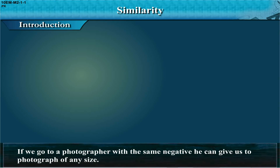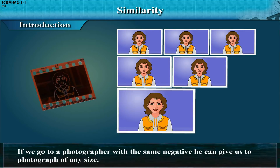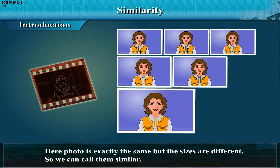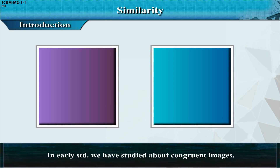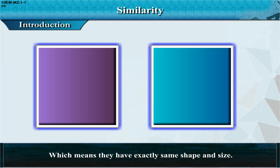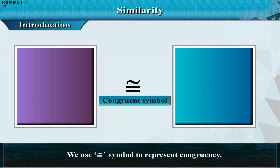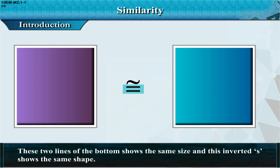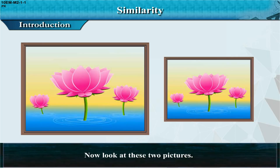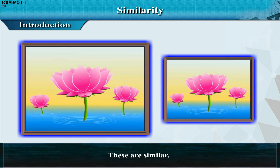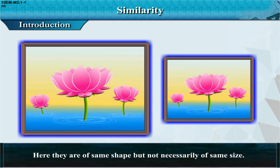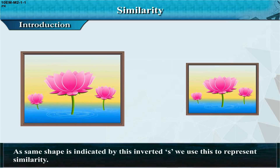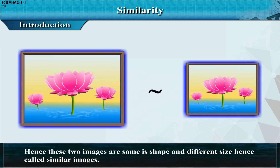If we go to a photographer with the same negative, he can give us photographs of any size. The photo is exactly the same but the sizes are different, so we can call them similar. In earlier standards we studied congruent images, which means exactly same shape and size. The congruent symbol represents congruency — two lines at the bottom show same size and the inverted 'S' shows same shape. For similar figures, they are of same shape but not necessarily same size, represented by just the inverted 'S'.